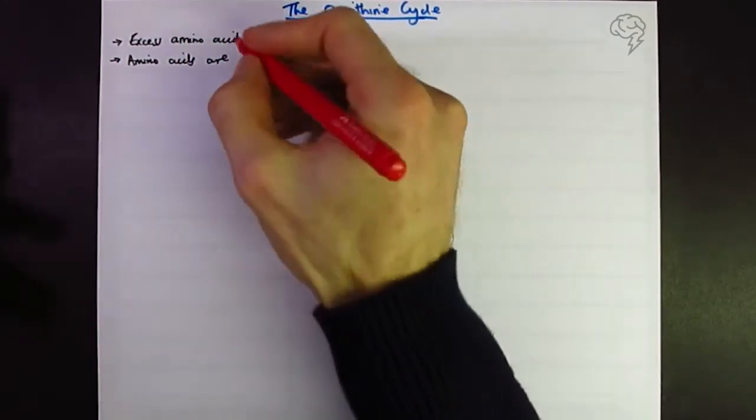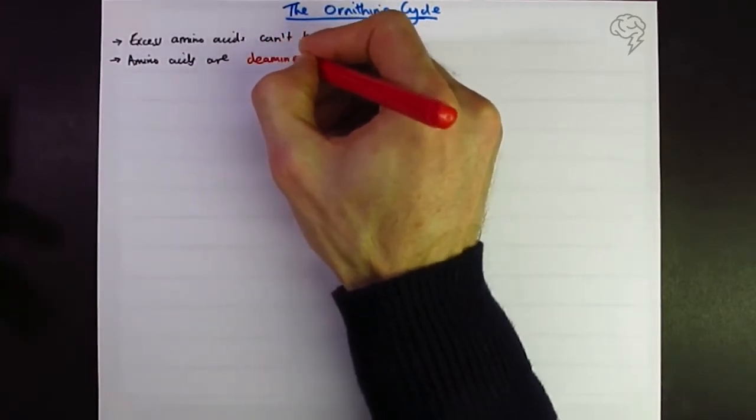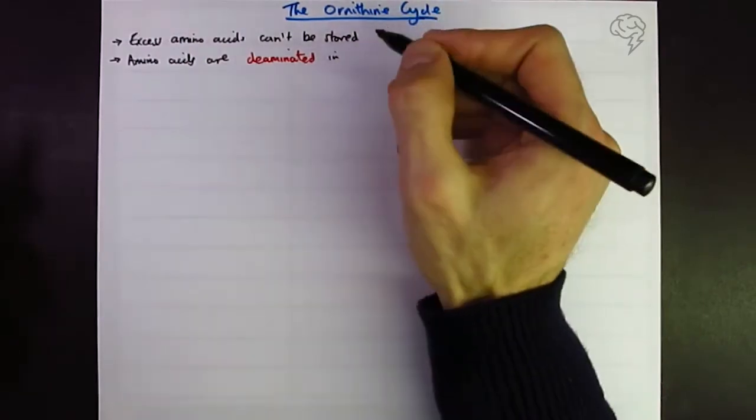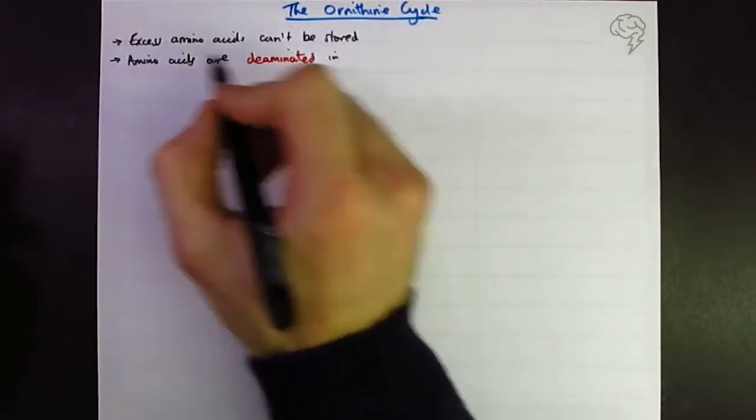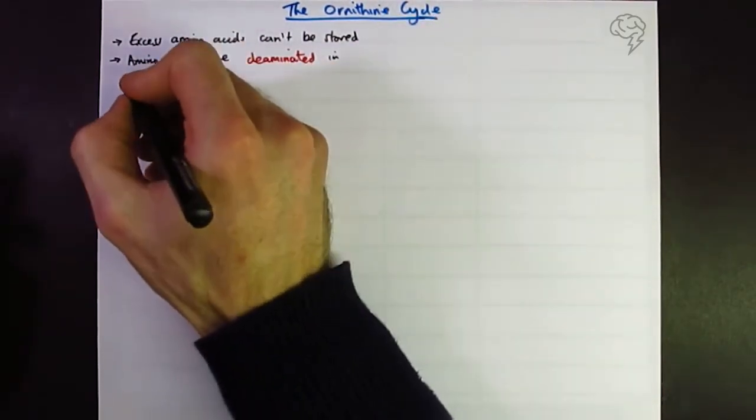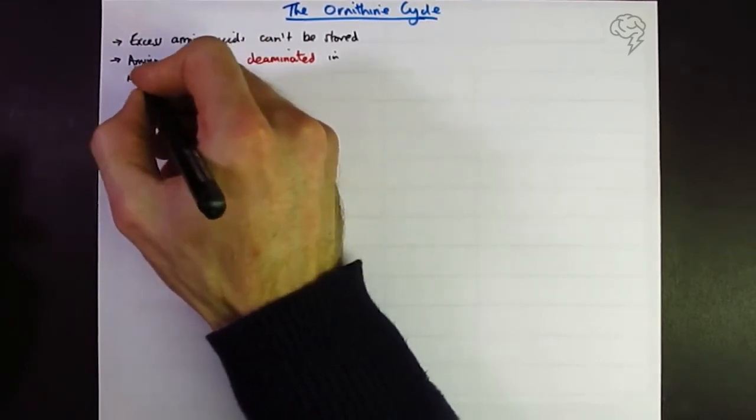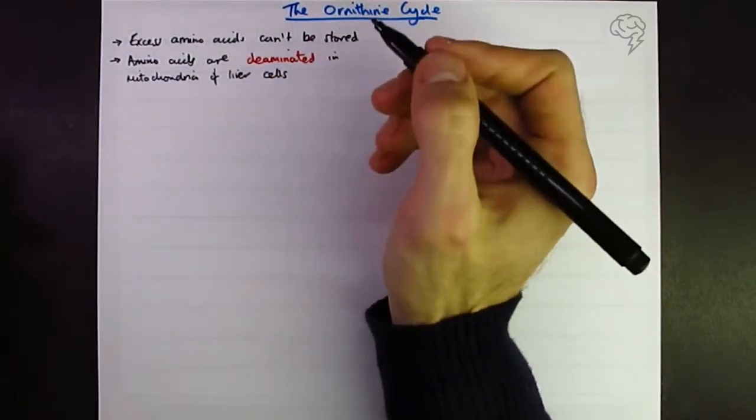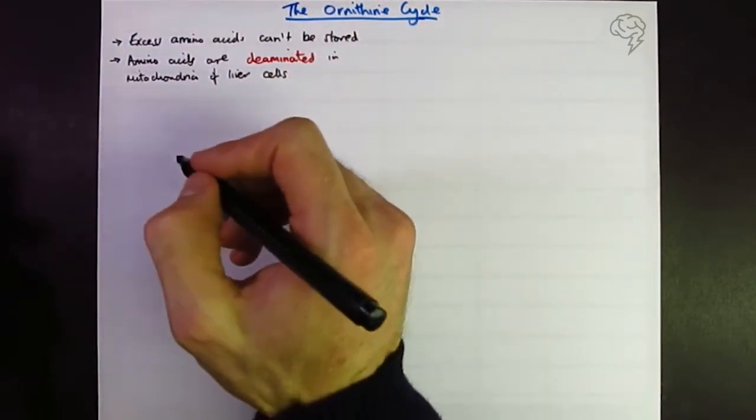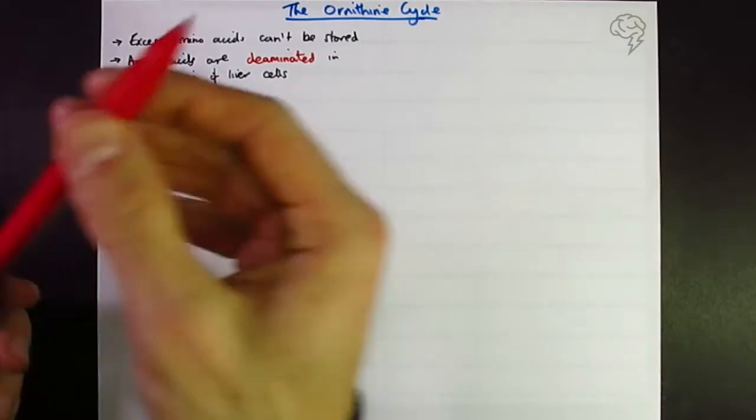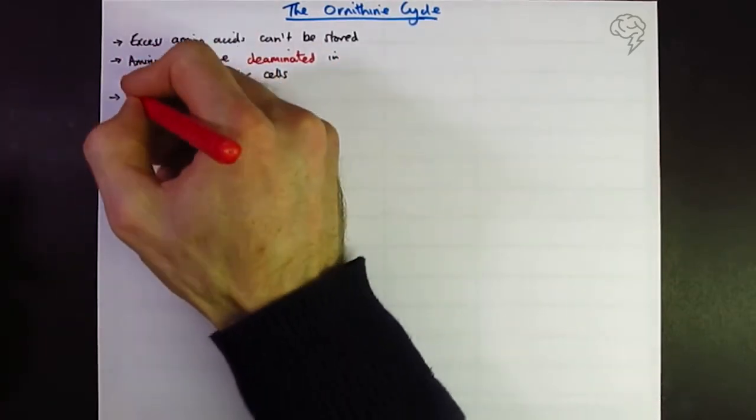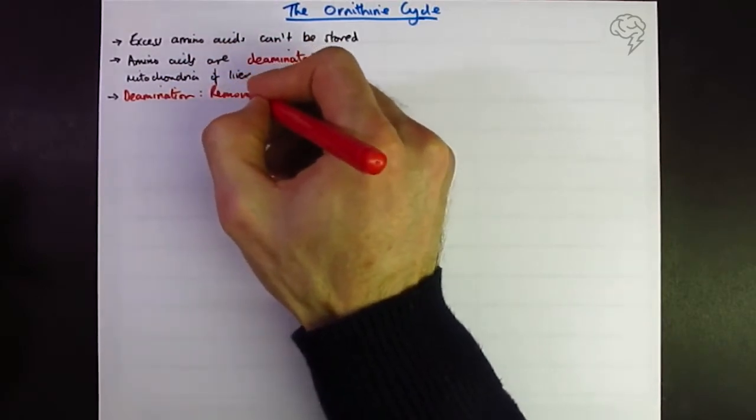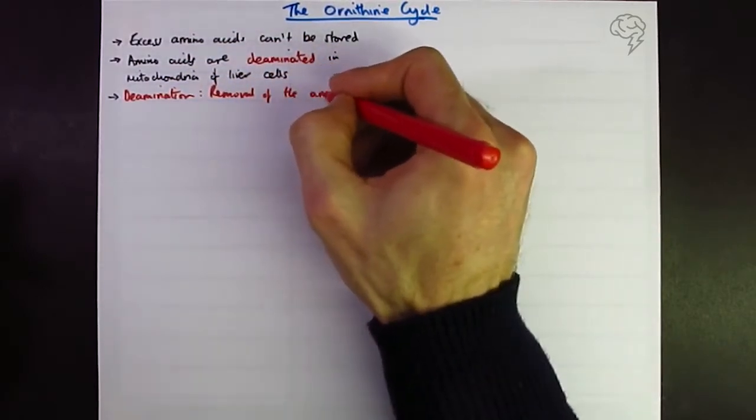Pretty important key term - make sure you include that in all your answers. Deamination happens in the mitochondria of liver cells. Let's define it: deamination is the removal of the amine group. You need to call it the amine group, not the amino group. They won't give you marks if you call it the amino group - that's technically wrong.